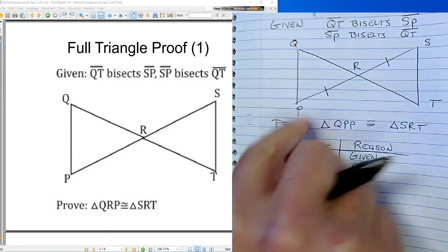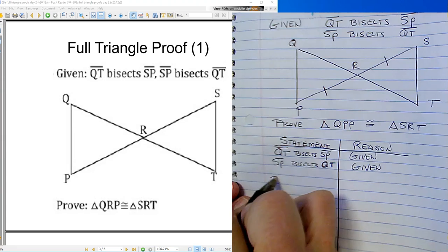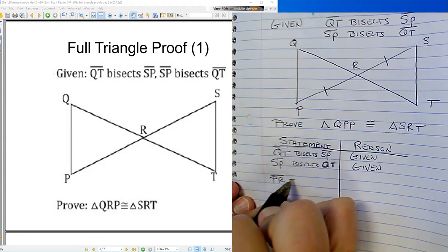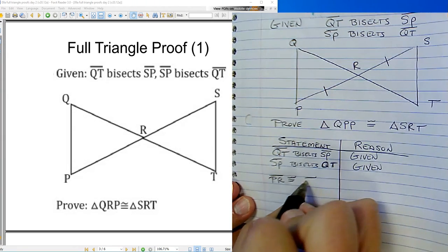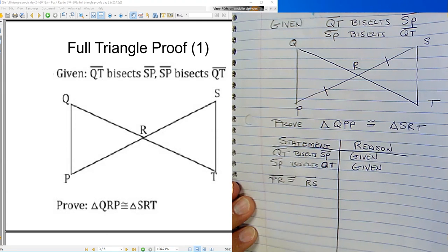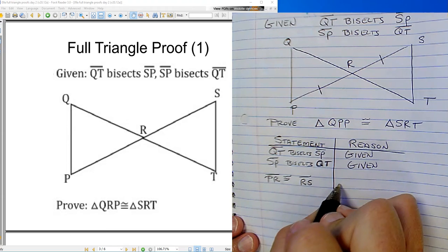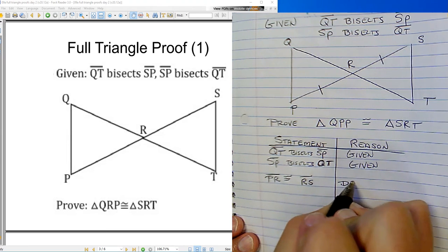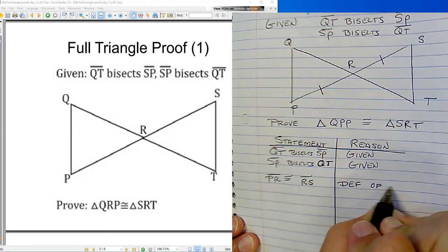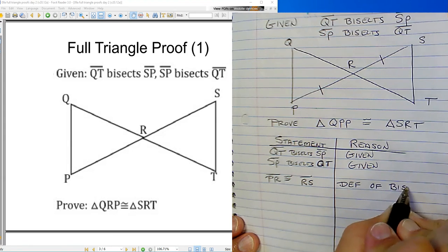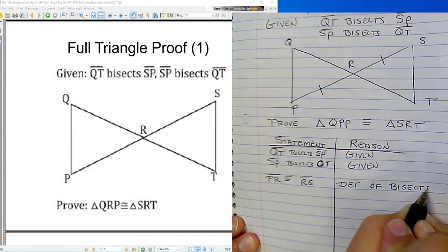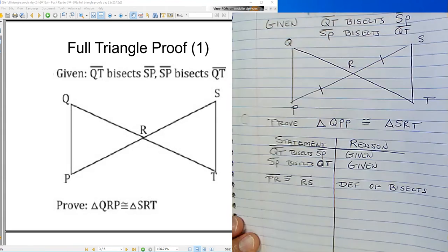So I know that PR is congruent to RS. How do I know that? Well, it's the definition of bisects. And notice I marked it up on my drawing.